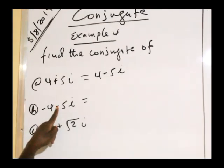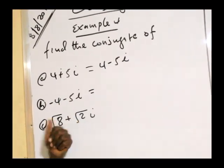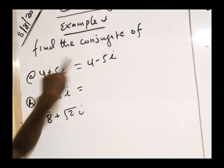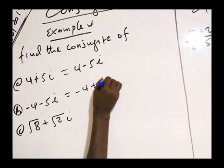Minus is the same. The second thing is minus. The conjugate of the conjugate is the same. This is minus, minus 4, minus 5i.